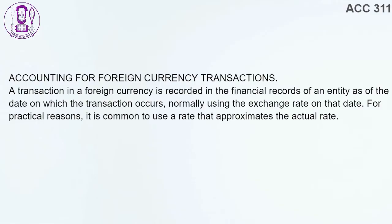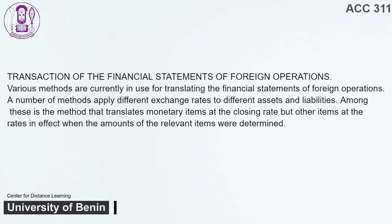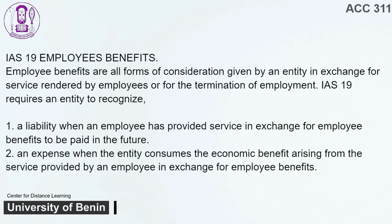Accounting for Foreign Currency Transactions. A transaction in a foreign currency is recorded in the financial records of an entity as of the date on which the transaction occurs, normally using the exchange rate on that date. For practical reasons, it is common to use a rate that approximates the actual rate. Translation of the financial statements of foreign operations. Various methods are currently in use for translating the financial statements of foreign operations. Among these is the method that translates monetary items at the closing rate but other items at the rates in effect when the amounts of the relevant items were determined.